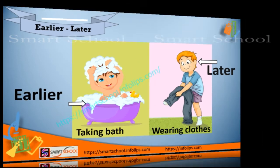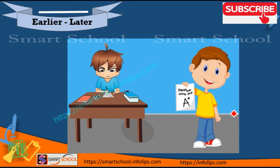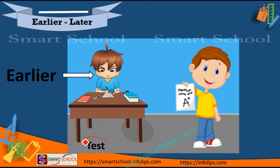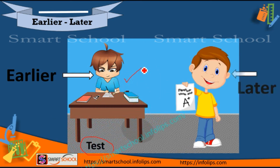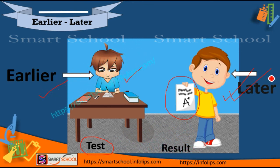Let's see another example. Tell me which activity is earlier and which is later in this picture. This student is doing a test, which is the earlier activity, and the result — he got an A-plus — that is the later activity. First we give a test, then comes the result.